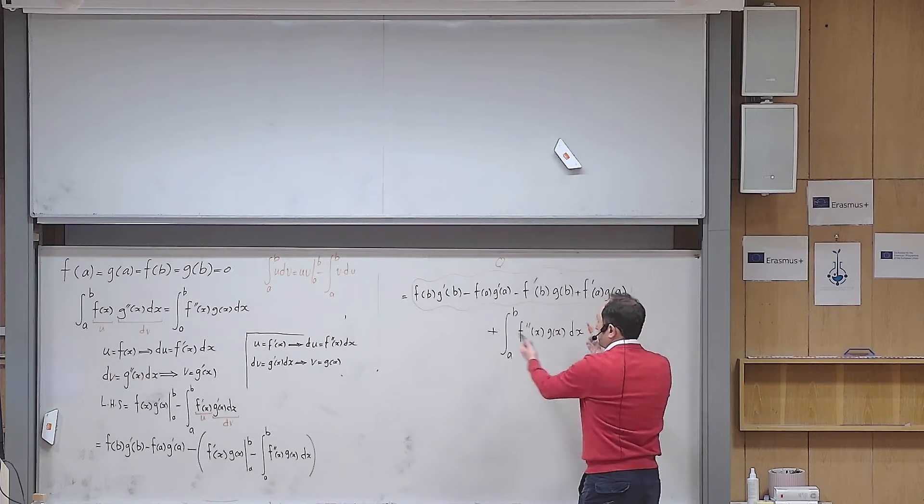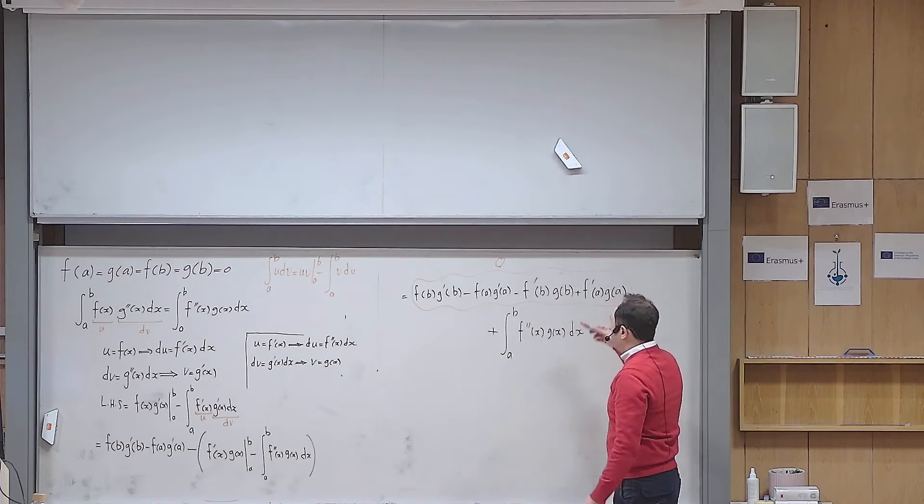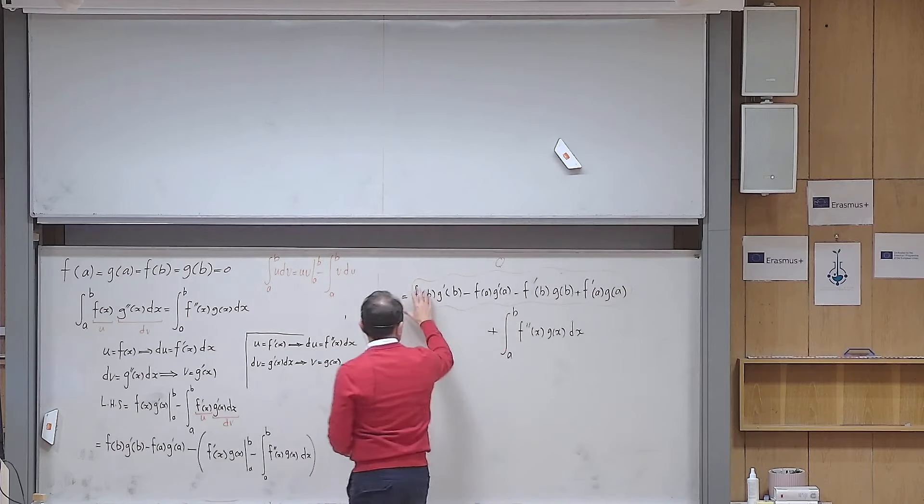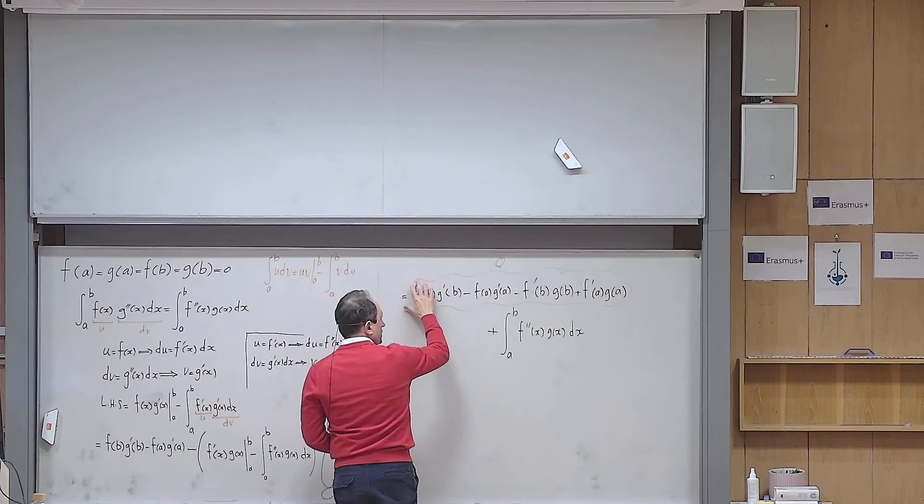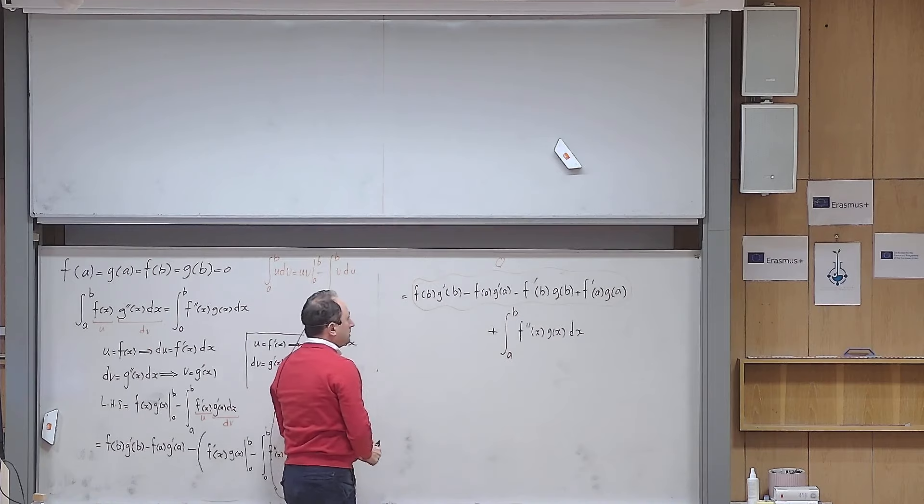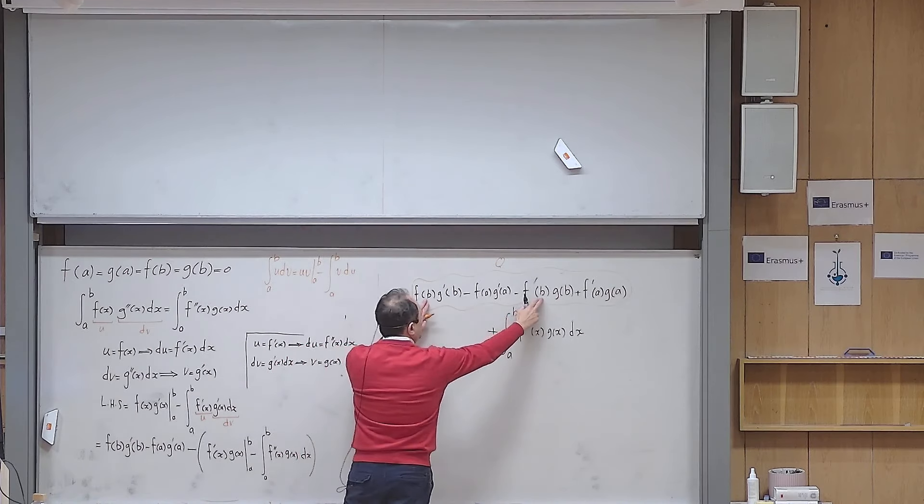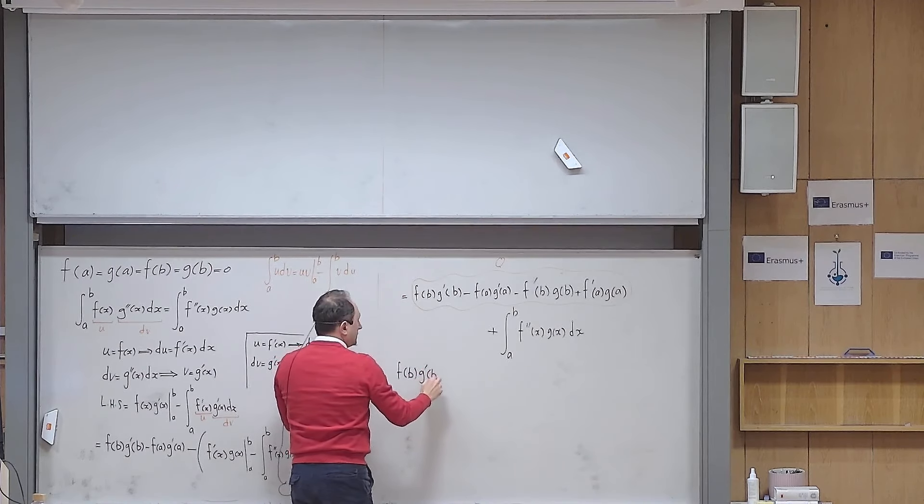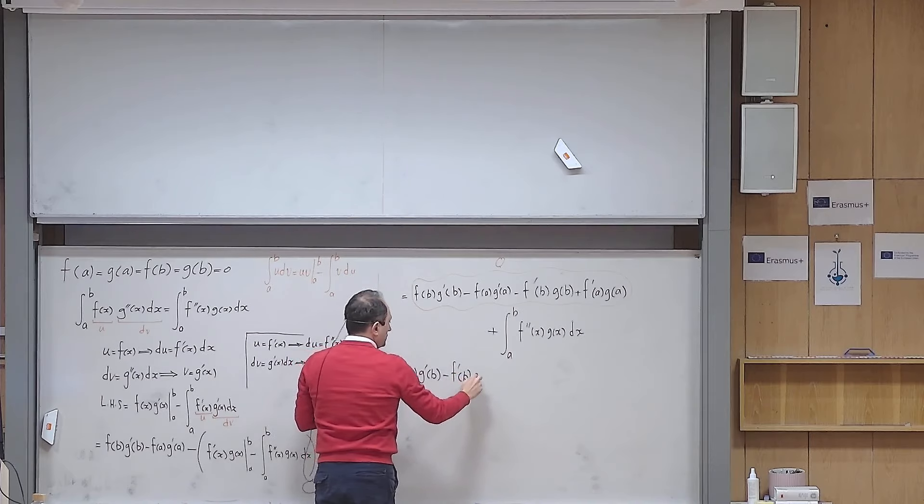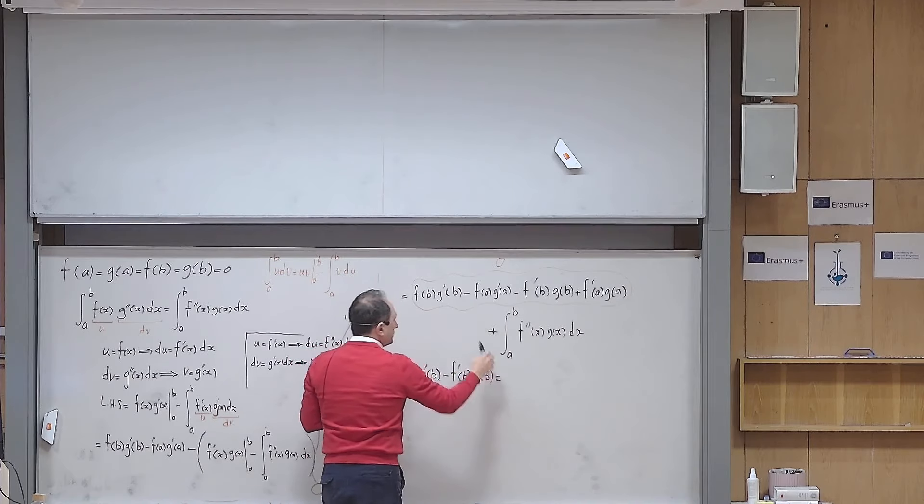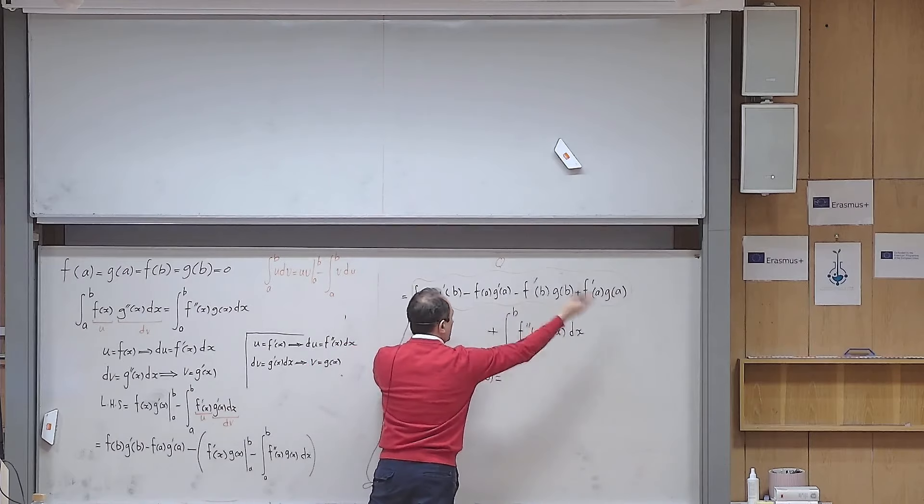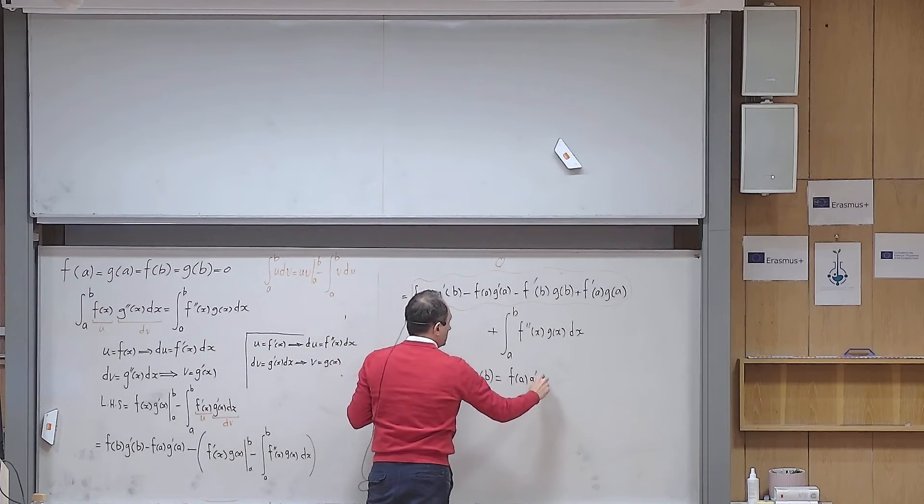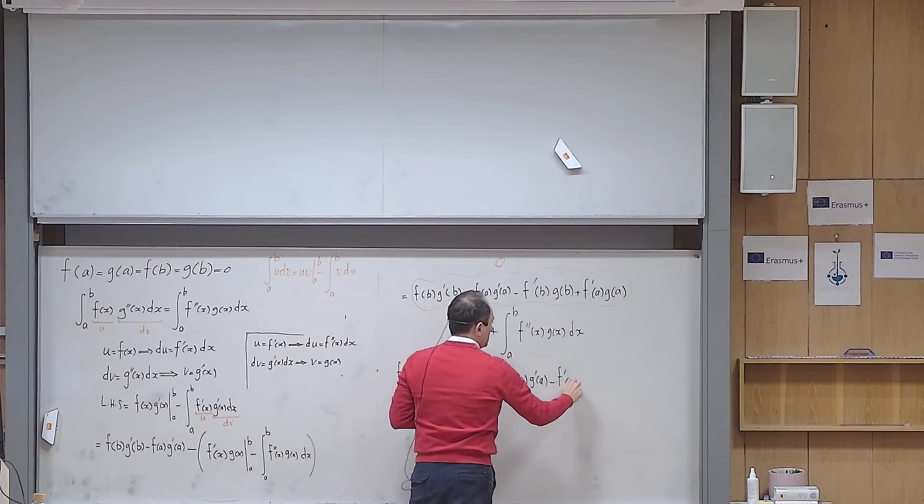If for functions f and g, this is guaranteed to be 0, then the left-hand side becomes equal to the right-hand side. One possible way to make this equal to 0 is having those conditions. But in general, my condition, the general condition is that this to be 0. So how can I write that to be 0? I can keep the b terms together. So f(b)g'(b) minus f'(b)g(b) equals 0. Equal to, I move these two to the other side. So it becomes f(a)g'(a) minus f'(a)g(a).